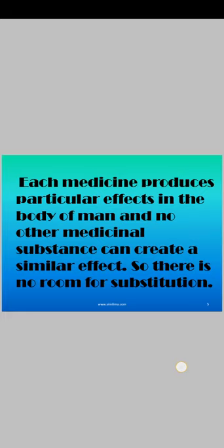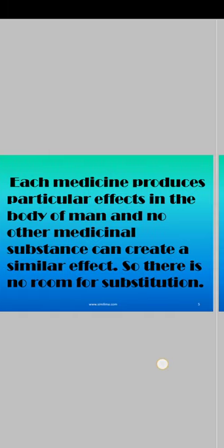Each medicine produces particular effects in the body of a man, and no other medicinal substance can produce precisely similar effects. So there is no substitute — no remedy that can be used for another remedy, as every atom of that substance produces a peculiar or particular effect on the human body. So no other medicinal substance can create any effect that is precisely similar. Therefore there is no substitute and no remedy that can be used for the other, and there is no place for substitution in homeopathy.